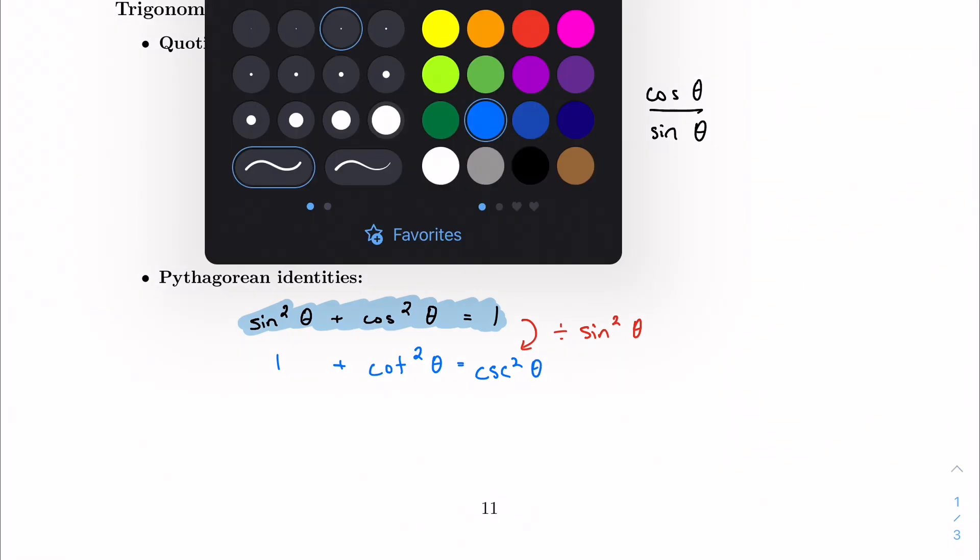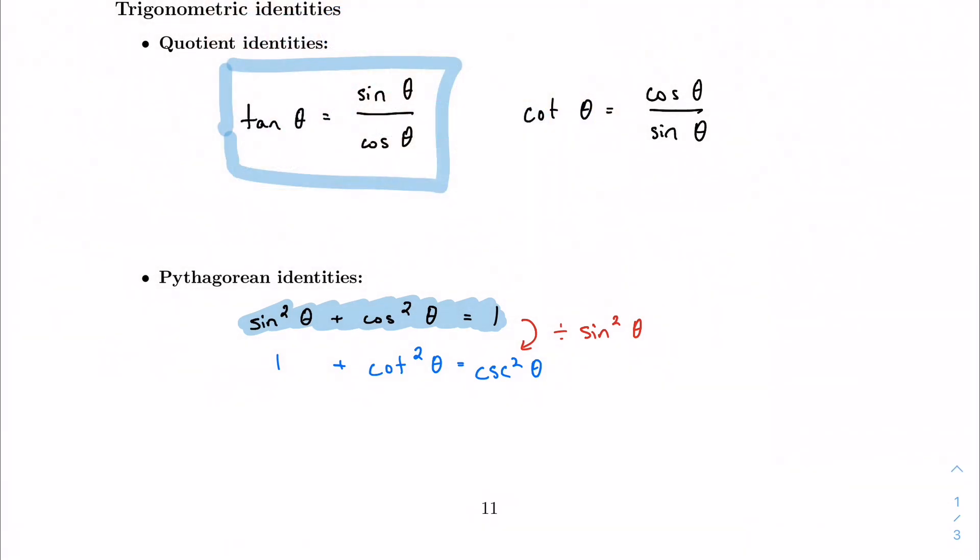And I can form one more Pythagorean identity if I take my initial one and follow the same process, except do it with cosine. So the next one I've got here is, well, sine over cosine is tangent. So this is tangent squared theta plus one equals secant squared theta.